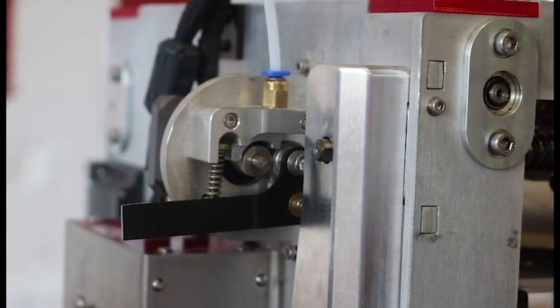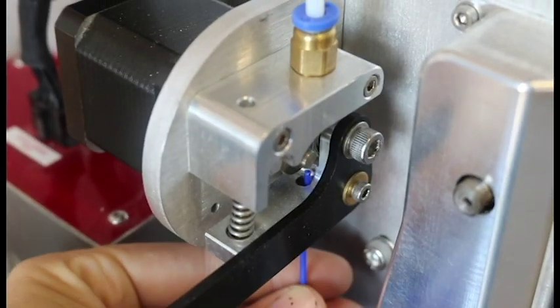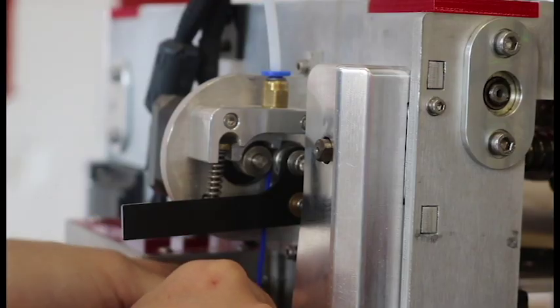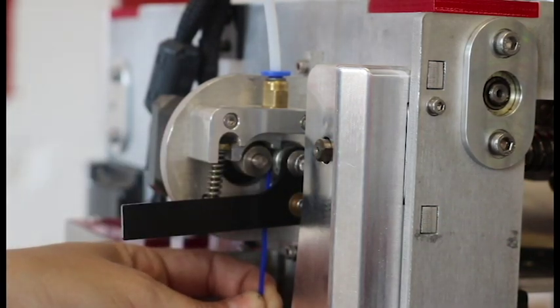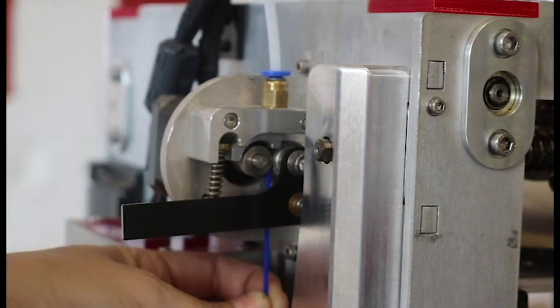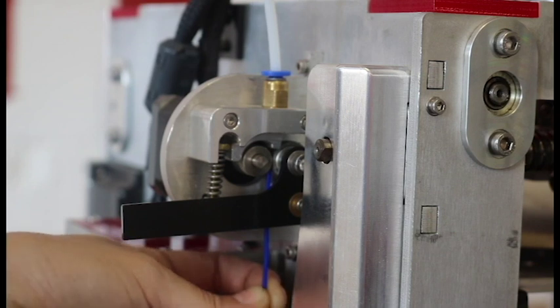So now we're ready to actually load it into the filament drive. So we're going to thread it through the bottom hole in the filament drive arm and we're just going to place it gently in between the bearing and the gear of the filament, just putting a little bit of pressure so it's sitting in between the two.